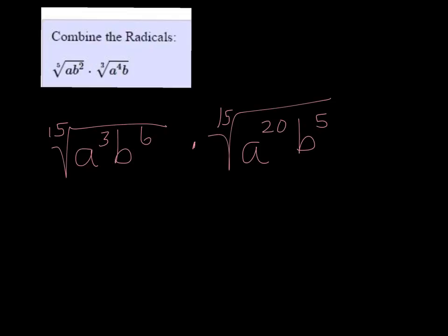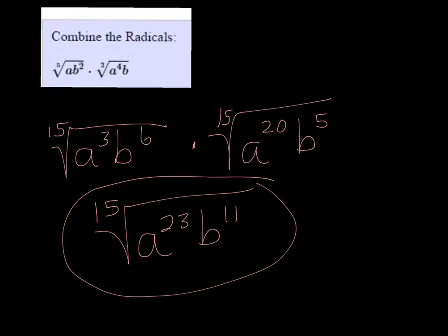Since they now have the same index, I can put them together, and I get a to the 23rd, b to the 11th. I can't simplify that at all, so it just stays just like that.